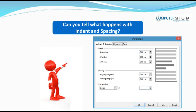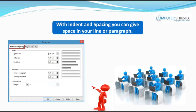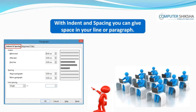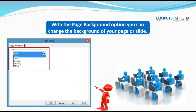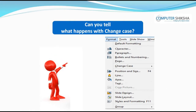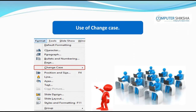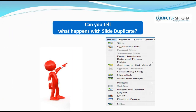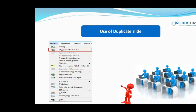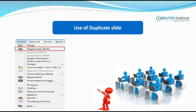With indent and spacing, you can give space in your line or paragraph. With the page background option, you can change the background of your page or slide. With change case, you can change the case of text to all capitals, all small, sentence case, or toggle case. With slide duplicate, you can copy any slide and it creates an exact similar slide to the original.